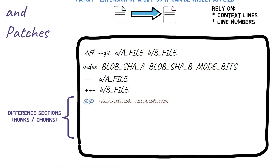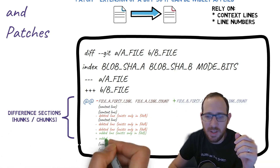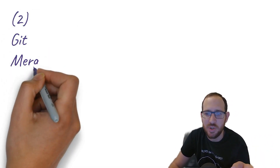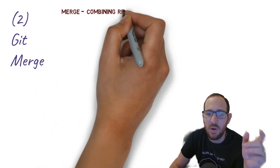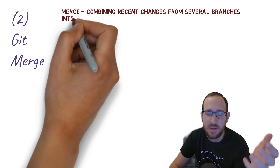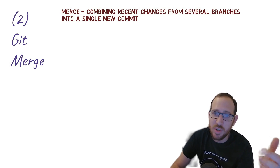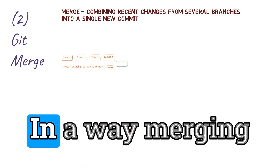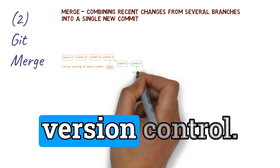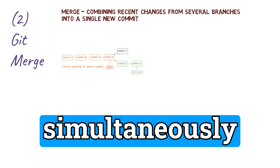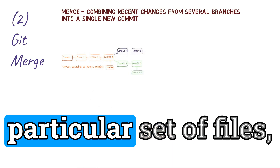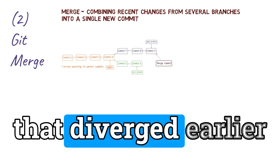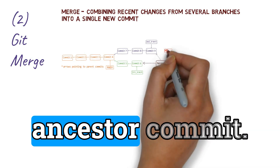In the second part of this series, we talked about git merge, and explained that merging is the process of combining the recent changes from several branches into a single new commit that is on all of those branches — that is, reachable from the branch object pointing to the tip of that branch. In a way, merging is the complement of branching in version control. A branch allows you to work simultaneously with others on a particular set of files, whereas a merge allows you to later combine separate work on branches that diverged earlier from a common ancestor commit.